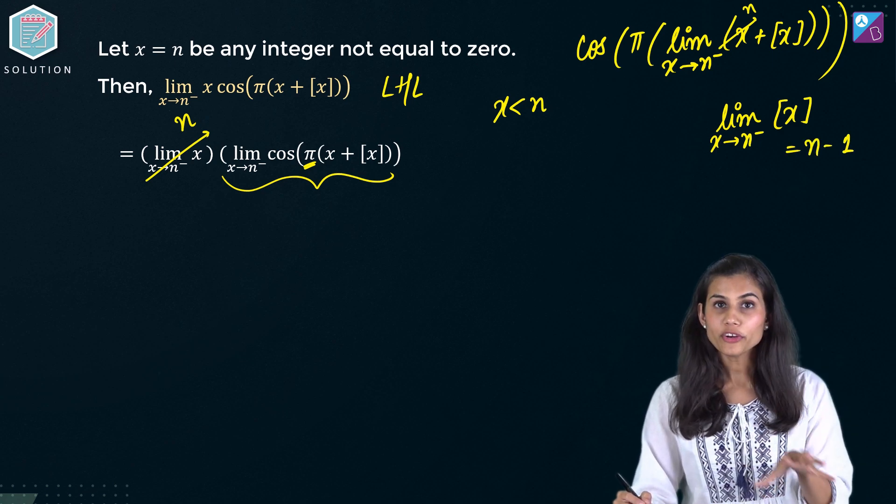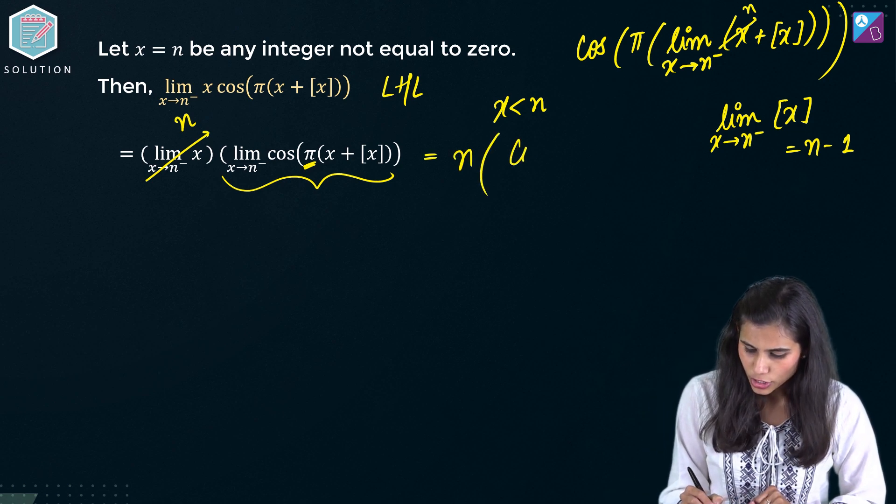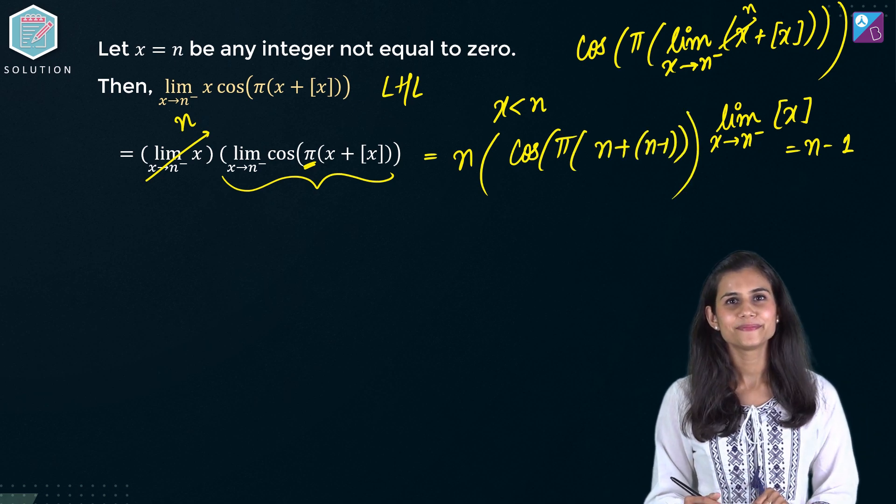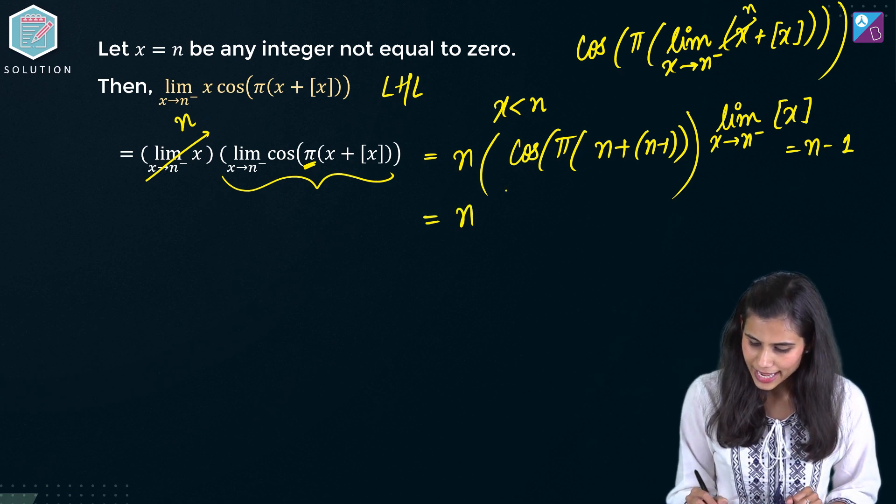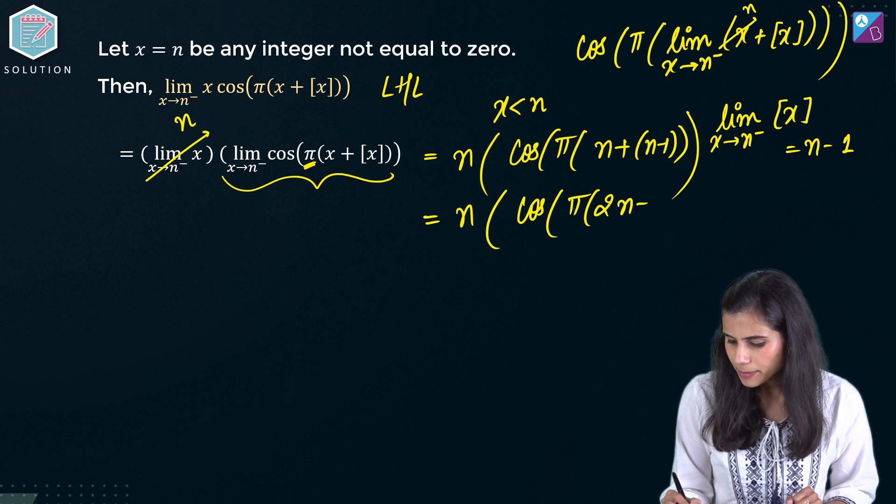So now your expression will be equal to n multiplied with cos of pi of n plus n minus 1. Correct? This comes out to be n multiplied with cos of pi of 2n minus 1. That means you have cos of odd multiples of pi.